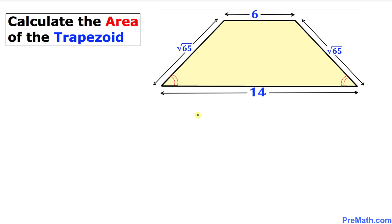Welcome to PreMath. In this video tutorial we are going to calculate the area of a given trapezoid. The dimensions of the trapezoid are 14, 6, and square root of 65, as you can see in the figure. Before we get started, let's go over the definition of this trapezoid.